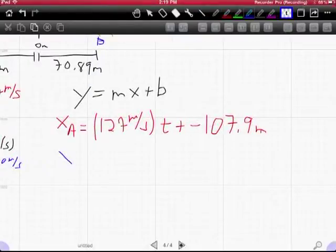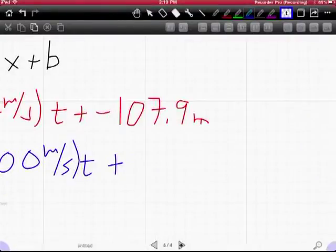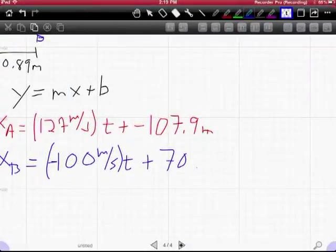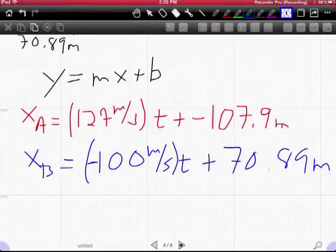Giraffe B, his position B, will equal 100 meters per second. He's going left, right? We made him go negative. Plus 70.89 meters. Okay? Those are my functions. Question, how do we got those? Slope, variable, y-intercept, like that.